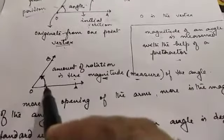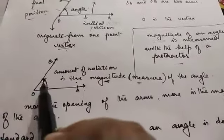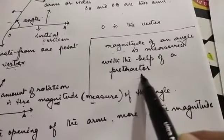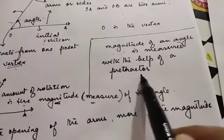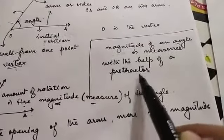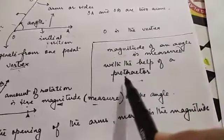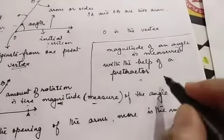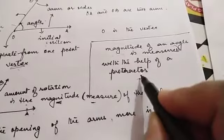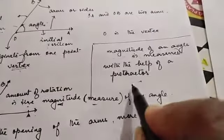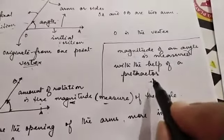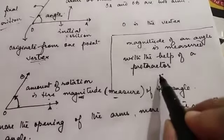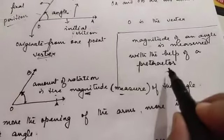The magnitude of an angle is measured with the help of a protractor. You know what a protractor is and you know how to measure an angle because you already had this in Standard 5.